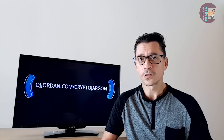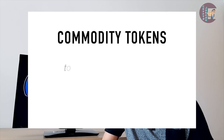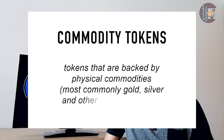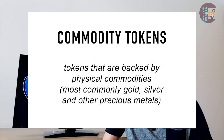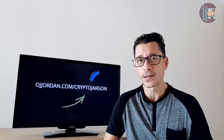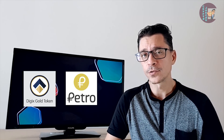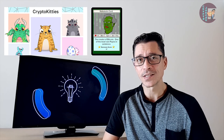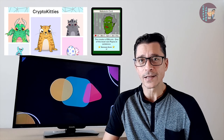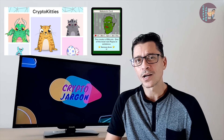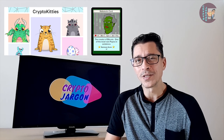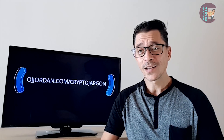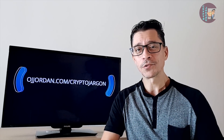Then we have commodity tokens — these are tokens backed by real-world commodities, whether gold, silver, or oil. The rate of these tokens depends on the rate of the commodity backing them; Digix and Elpetro are two such examples. Lastly, there are even collectible tokens. Crypto Kitties and Rare Pepe are such examples — these tokens represent a virtual collectible unit like baseball cards, adorable kitties, or memes, and they're built on the blockchain. This concludes today's episode of Crypto Jargon.